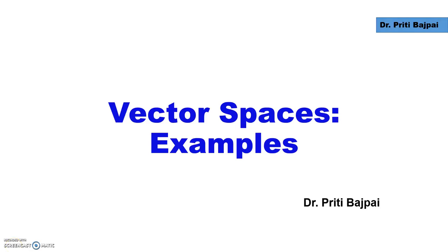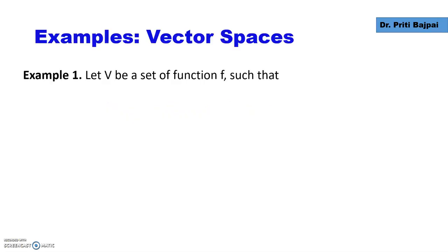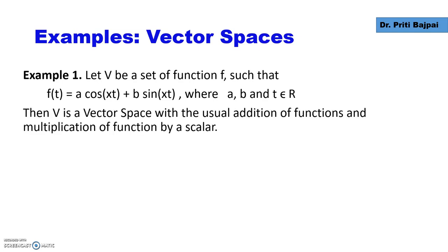Welcome back. Let's do some more examples on vector spaces. Let's say V is a set of functions f such that f(t) = a cos(xt) + b sin(xt), where a, b, and t are all real numbers.